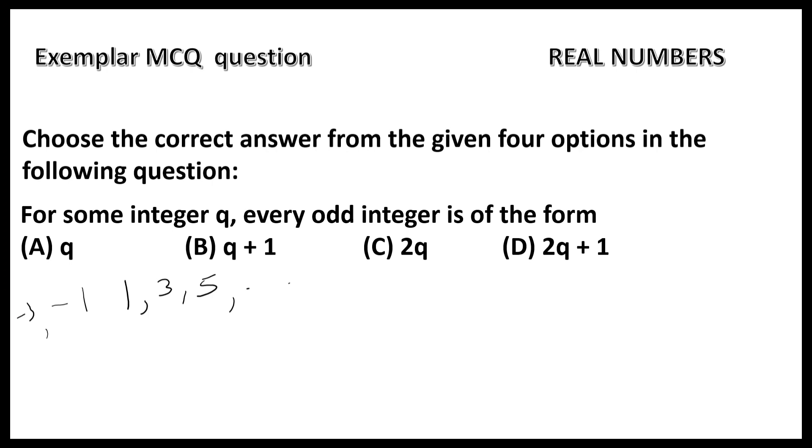How do we get these odd integers? If we add 1 to an even integer, let us take the even integer 4. 4 plus 1, 5, which is an odd integer.